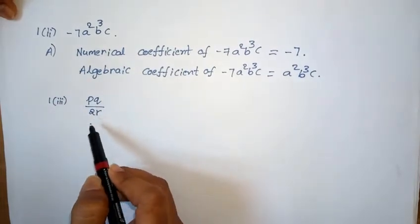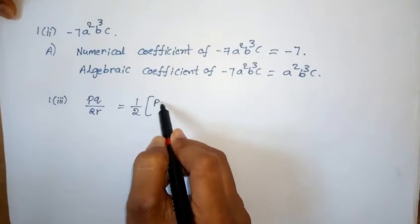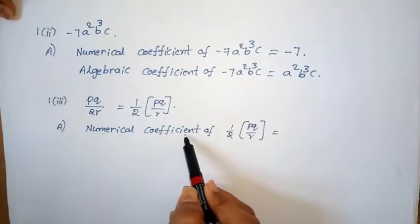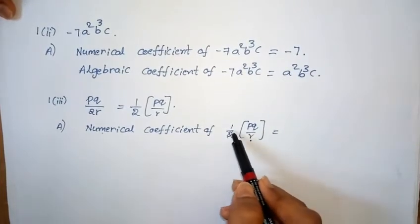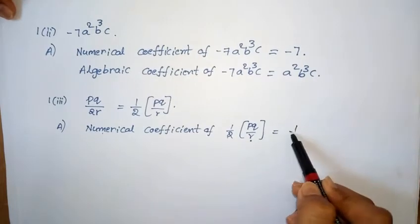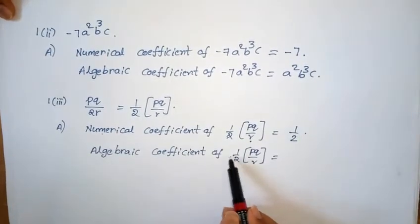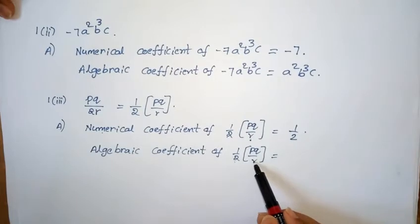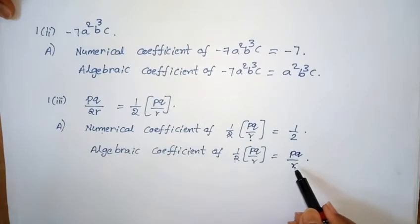Third one: pq divided by 2r. I can rewrite this as 1/2 into p/r. Numerical coefficient of (1/2)(p/r) is equal to 1/2. Algebraic coefficient — all symbols and letters belong to algebraic coefficient, so p/r is the algebraic coefficient.